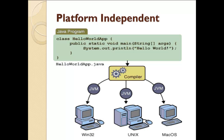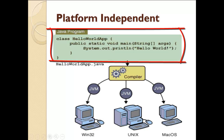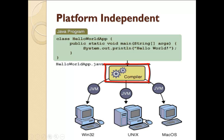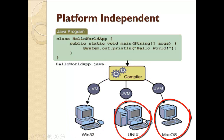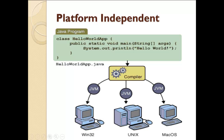The next feature is platform independent. Java is totally platform independent. Suppose here is a Java program — after compilation we get a compiled code. We can execute this compiled code on any type of machine, whether it is a Windows machine, Linux machine, Mac machine, or any other type of operating system or hardware. We don't need to change the program code or compiled code for different types of machines.